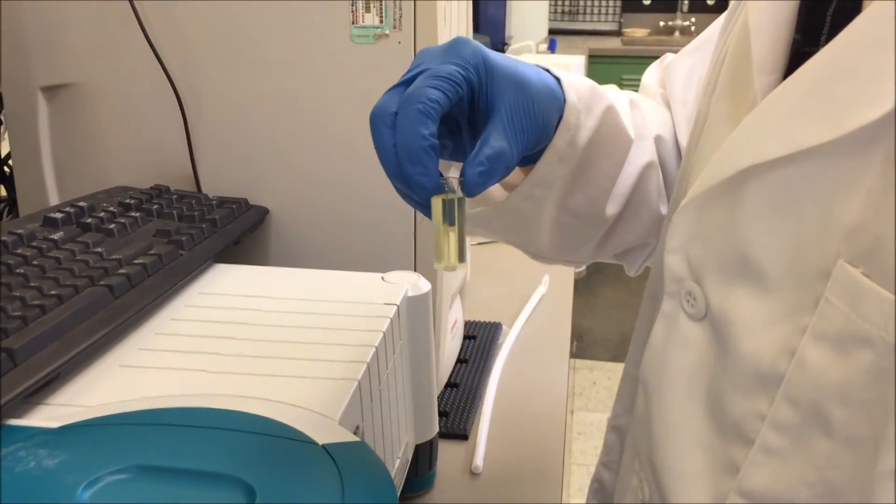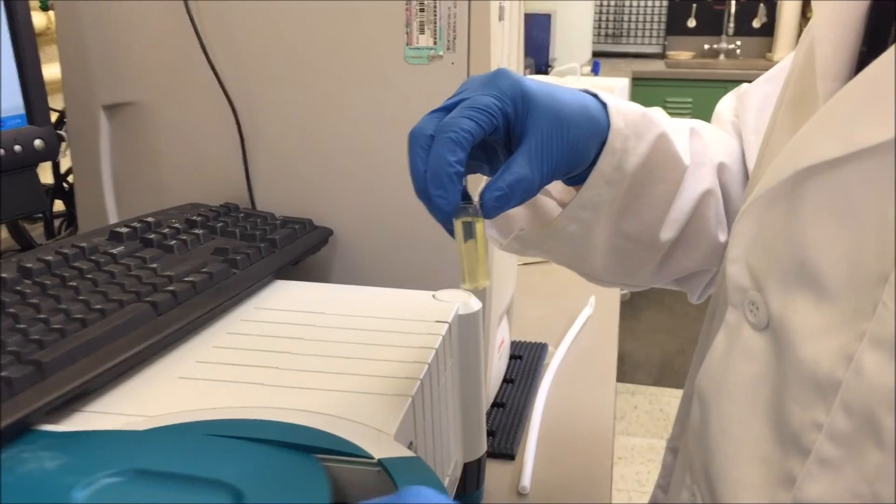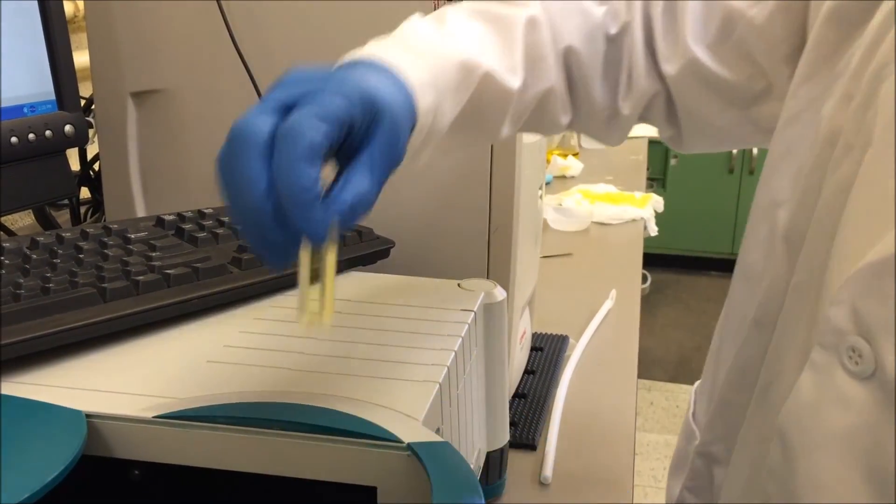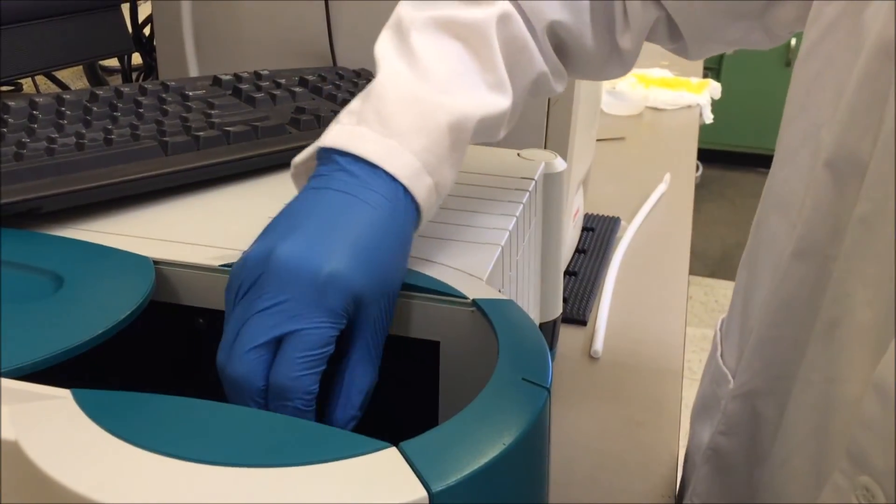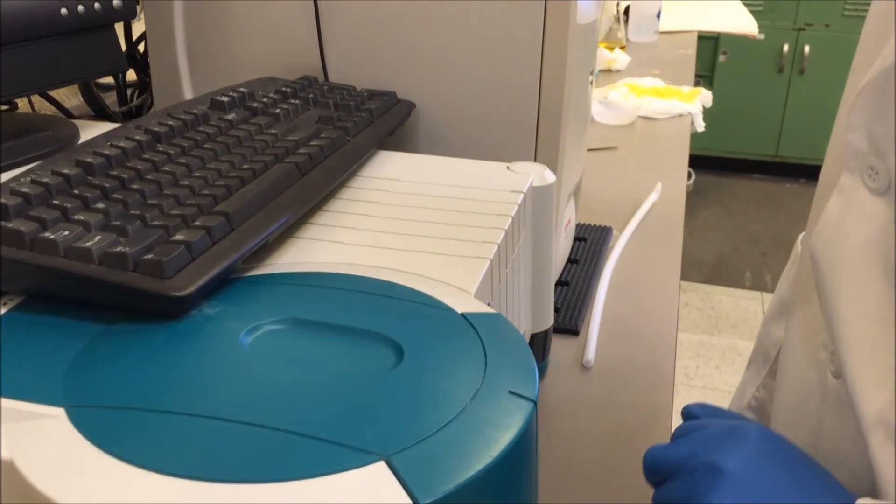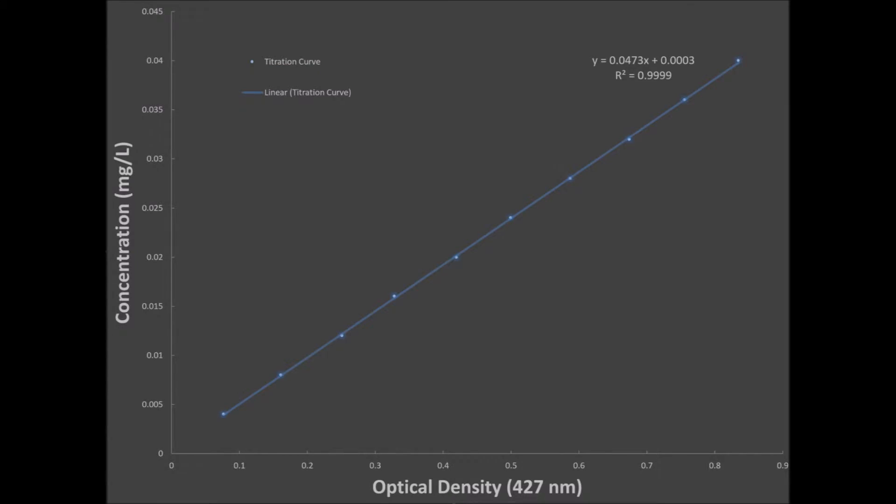When taking your spectrometer readings, first set your spectrometer to 427 nanometers and wipe your cuvette with a kim wipe. Then correctly place the cuvette in the machine as shown. This is our calibration curve.